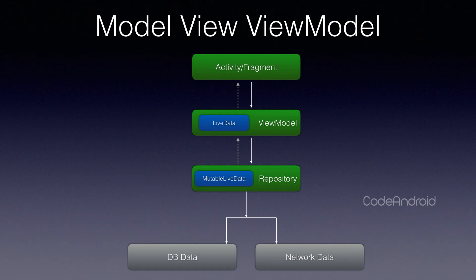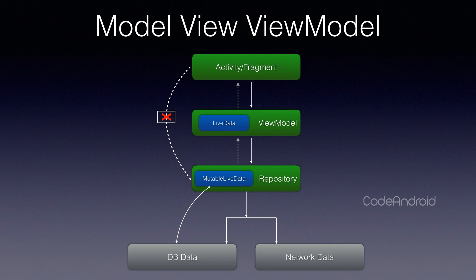Only the mutable object from the repository allows modification. We do this to create an abstraction between View and Model, so that we can avoid accidental value changes on the data. The Model, also known as Repository, takes care of business logic and updates the appropriate MutableLiveData. The change on the MutableLiveData affects the LiveData. Once the LiveData changes its value, it will trigger the observer on the View. Like this, these three components communicate with each other while providing abstraction.